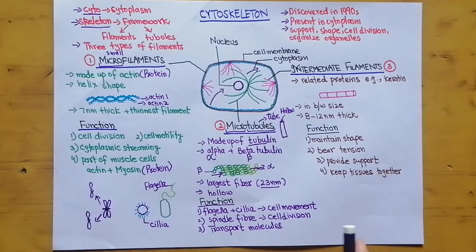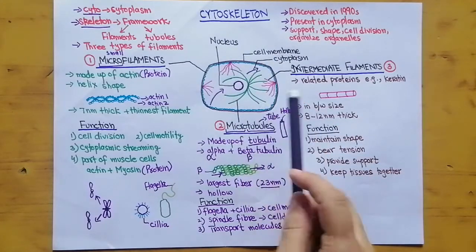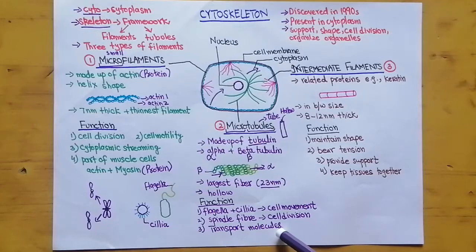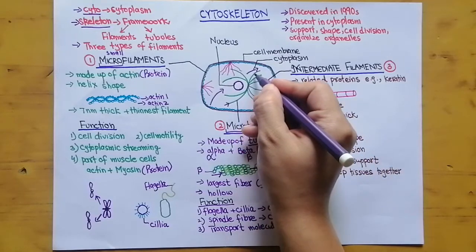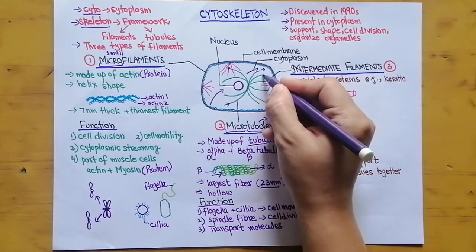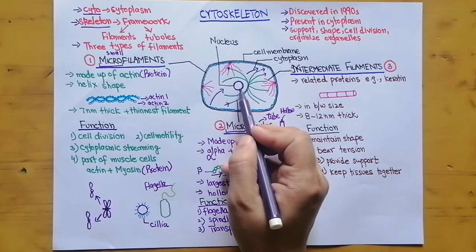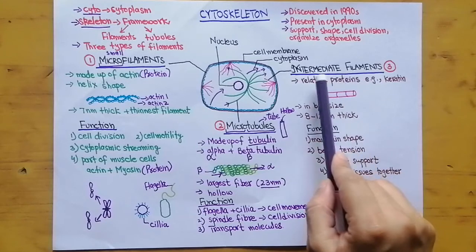Because microtubules are hollow, they are also very helpful in transporting molecules from one part of the cell to another. As shown in the diagram, a molecule entering one part of the microtubule can move through its hollow structure to other parts of the cell. Since microtubules are present near the nucleus, they also assist in chromosome division.